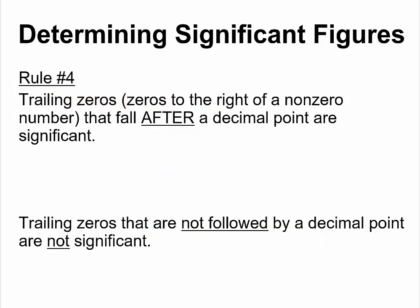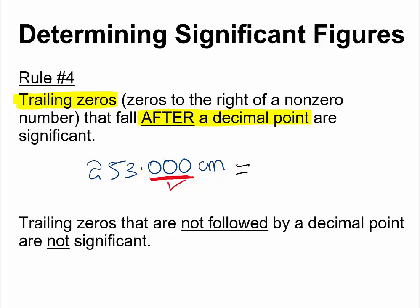Rule number four: there are some zeros that are considered trailing zeros, and that could be a little tricky, because there are two types of trailing zeros. Look at this number: 253.000 cm. These zeros are considered trailing zeros because they are to the right of a non-zero number. In this case, these three zeros will be considered significant because they fall after a decimal point.